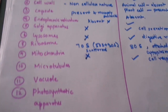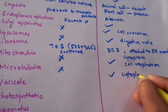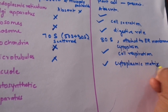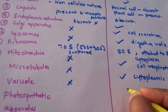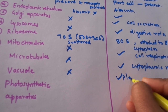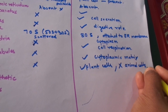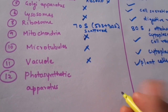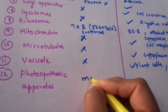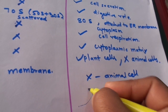Then come microtubules and microfibrils — these are absent in prokaryotic cells and present in the cytoplasmic matrix in eukaryotic cells, and are present only in plant cells. The photosynthetic apparatus is present in both cases: it is present in the form of a membrane in prokaryotic cells, but in eukaryotic cells it is absent in animal cells and present in plant cells.